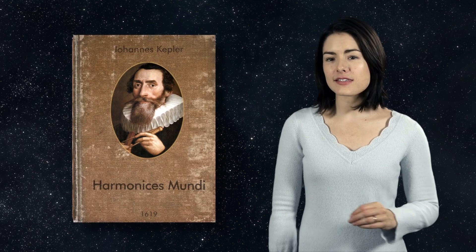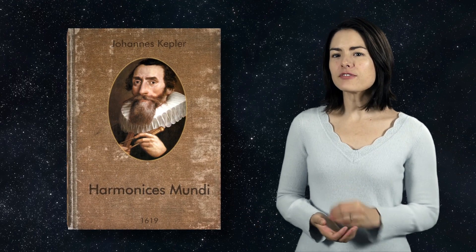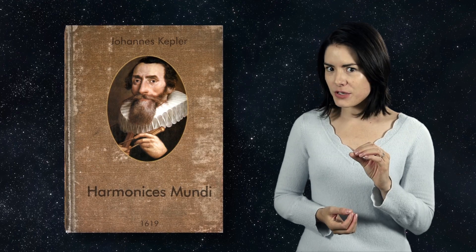Kepler published his third law ten years later in his 1619 book Harmonices Mundi, or The Harmony of the World. By sifting through observations of how the planets move in their orbits, he noticed something curious.